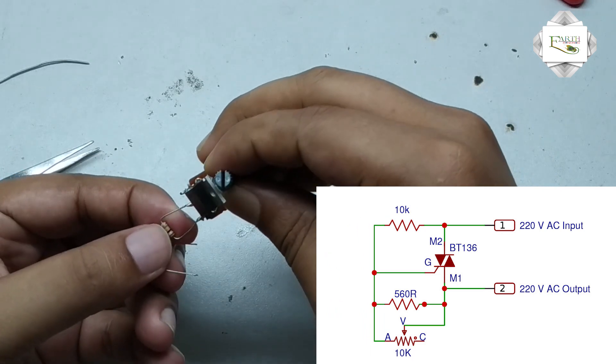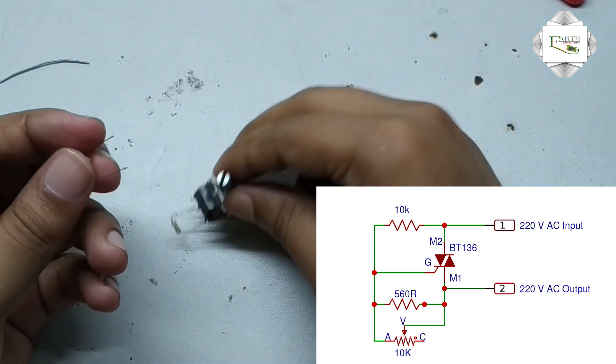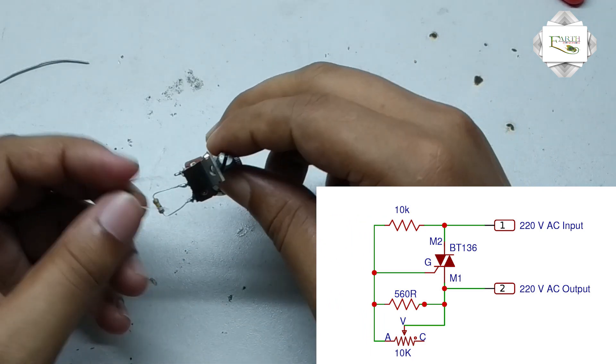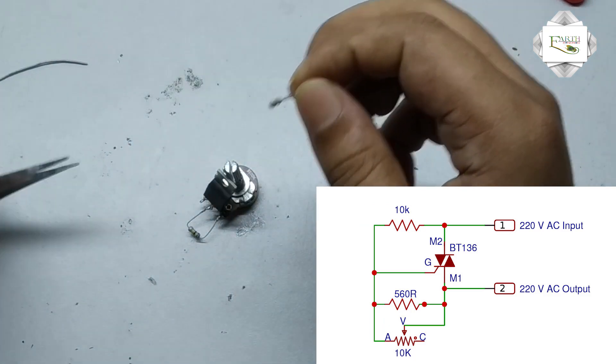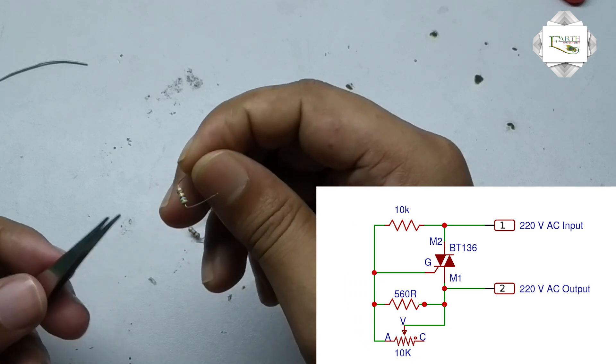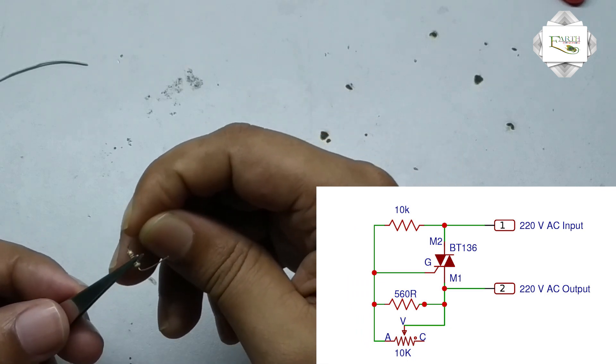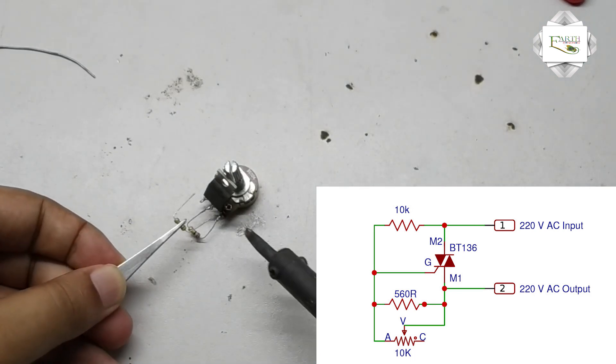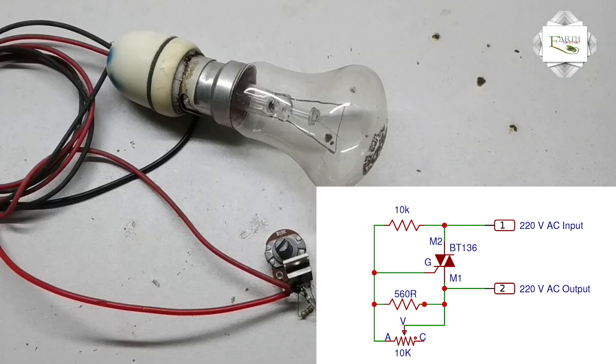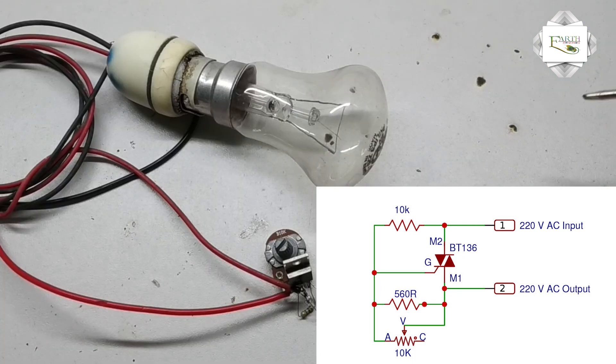Now connected the second resistor, 560 ohm resistor. I connected the IC input and output, IC terminal 3 and 1. All soldering is complete.